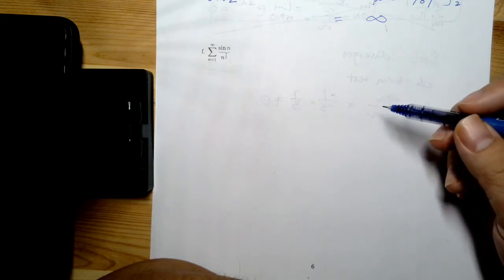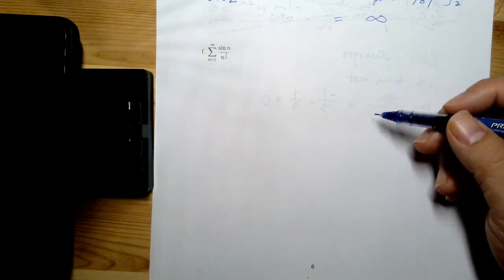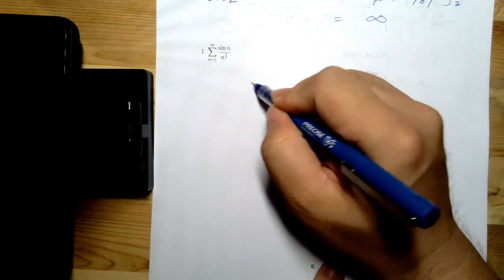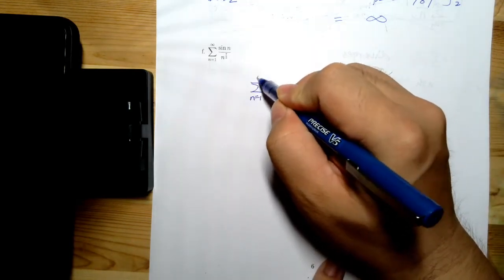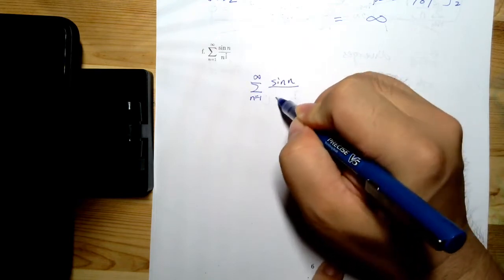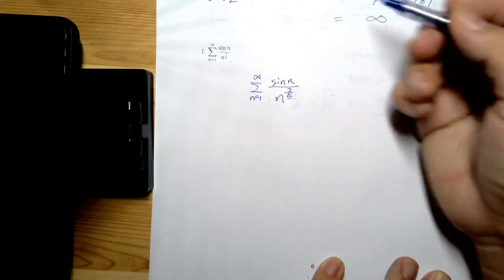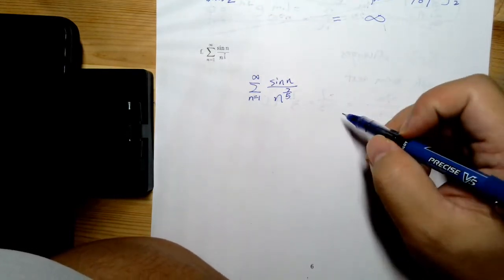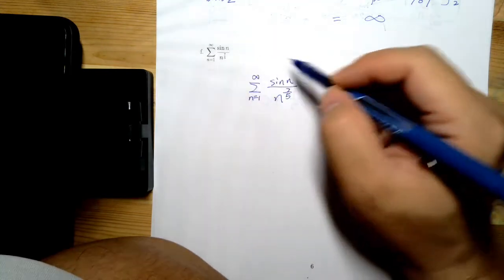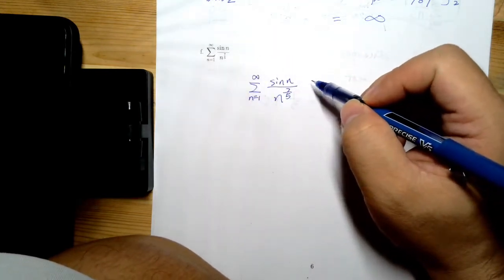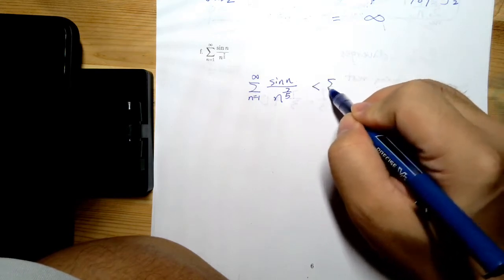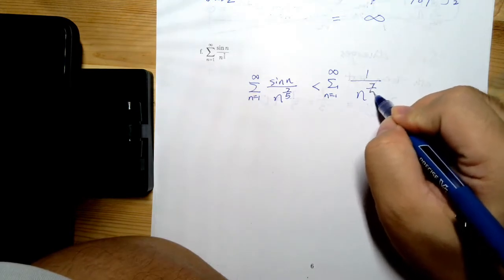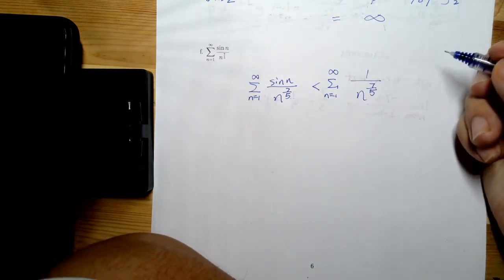Look at the next problem: sin(n) over n to the power of 7/5. For this series, the best approach is using the direct comparison, because sine of n is bounded above by 1. So this is less than 1 over n to the power of 7/5.